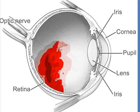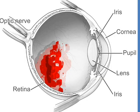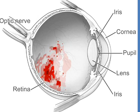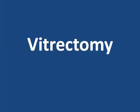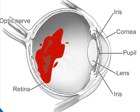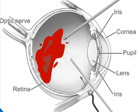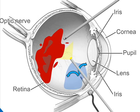Vitreous hemorrhages may clear on their own over time. Floaters may gradually drift down out of central vision, and blood may be reabsorbed. But the process is quite slow — complete clearing can take months after the bleeding is stopped. Alternatively, vitreous hemorrhages may be cleared surgically using a procedure called a vitrectomy. During a vitrectomy, small instruments are passed into the eye through the white of the eye. These instruments are used to remove blood and vitreous while at the same time infusing a replacement saline solution.